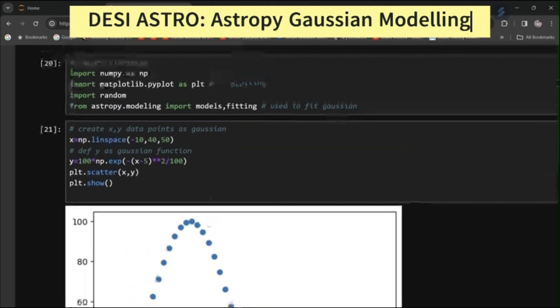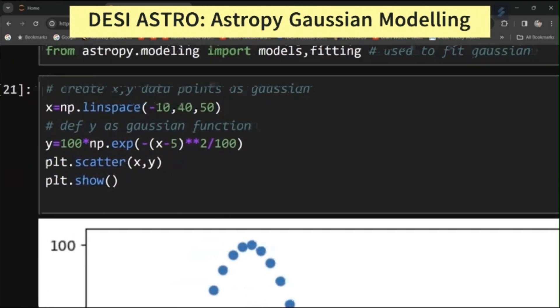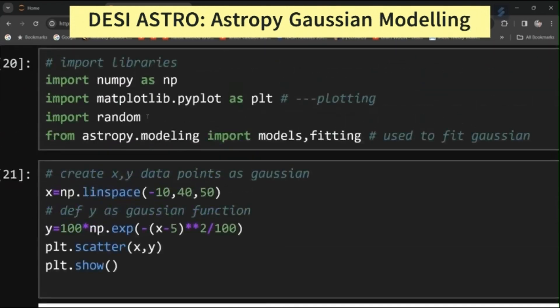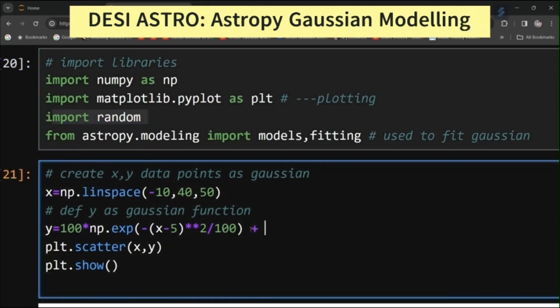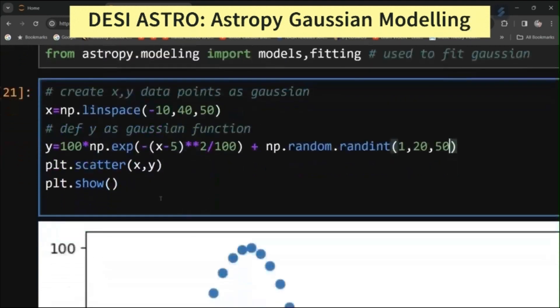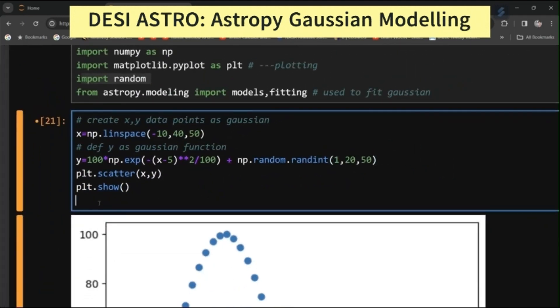Our objective is to fit a Gaussian through these data points and obtain its parameters. For that I will add some noise in Gaussian. I will add np.random.randint and I will add noise as 1 to 20 and equal to the data points as x data points. Now plot it, see how it appears.